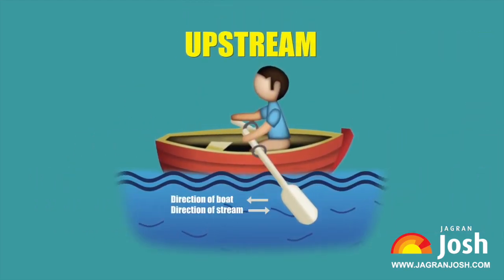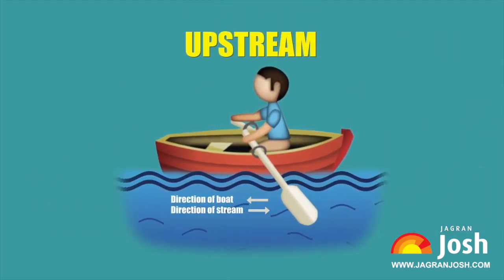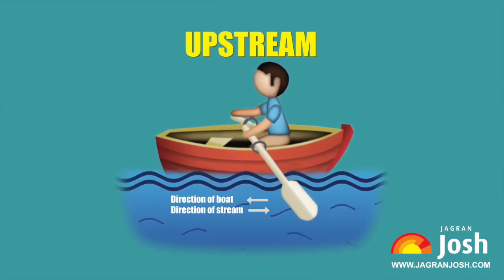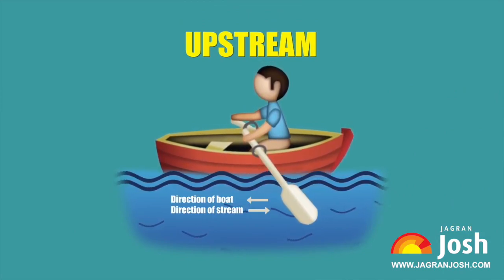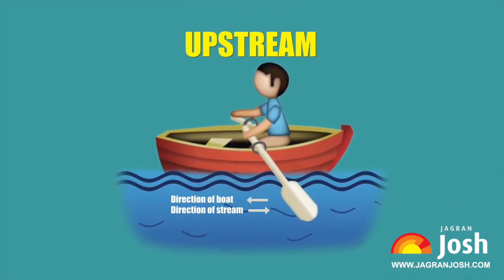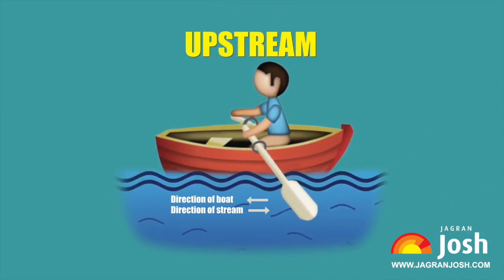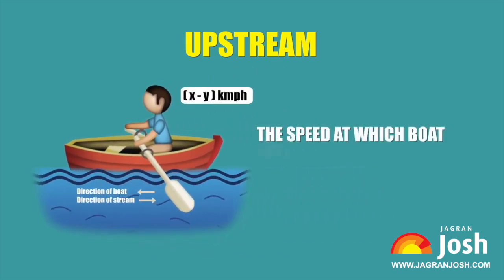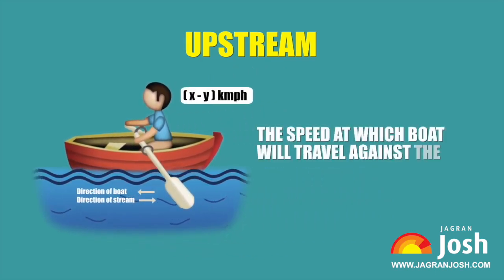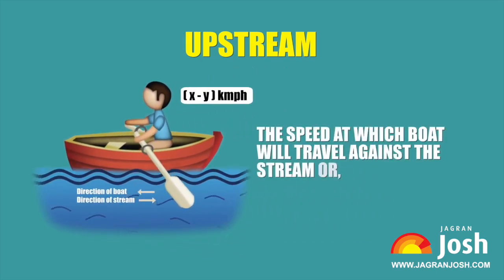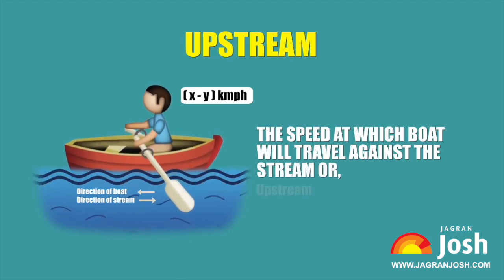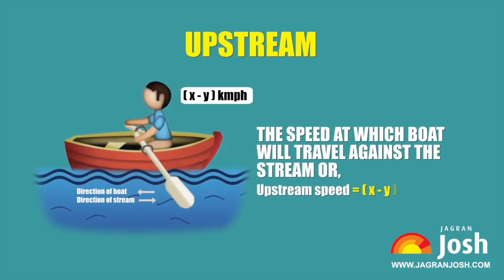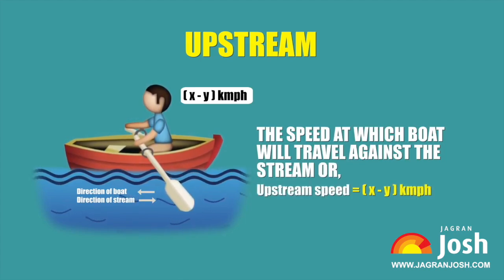Upstream: If the speed of a boat in still water is x km per hour and the speed of the stream is y km per hour, then the speed at which the boat will travel against the stream — or upstream speed — is equal to x − y km per hour.